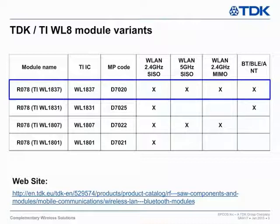We sample the D7020 variant, which is EPCOS part number B30931D7020Y918. All the latest specs and complete EPCOS part numbers can be downloaded from our website.